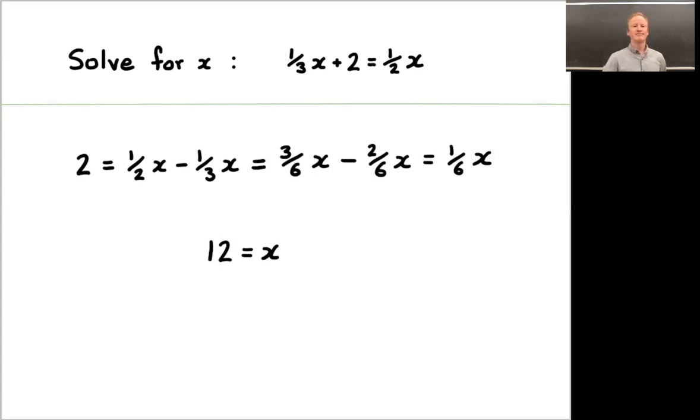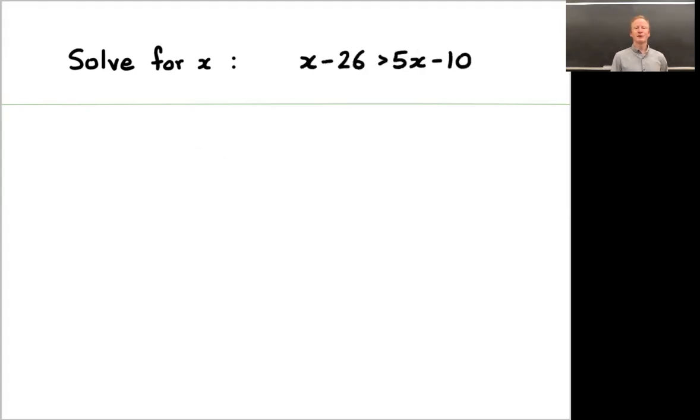Let's go ahead and look at a second problem. Solve for x if x - 26 is greater than 5x - 10. Press pause here and take a moment to do that. Welcome back. We can subtract x and then add 10 and then divide by 4. -4 is greater than x. That's a perfectly good solution. Some of you may have written it as x is less than -4 and that is also correct. Those are the same thing.